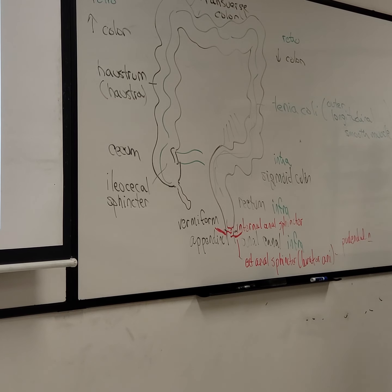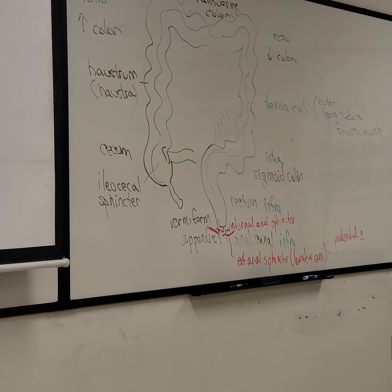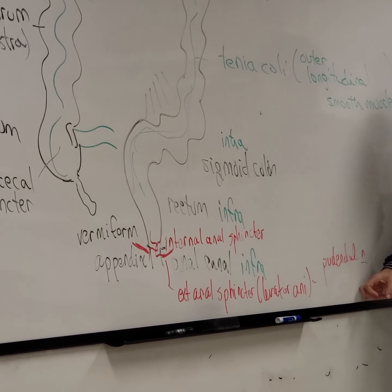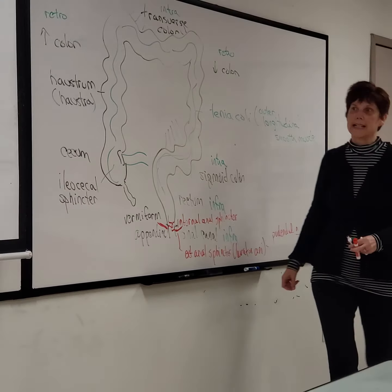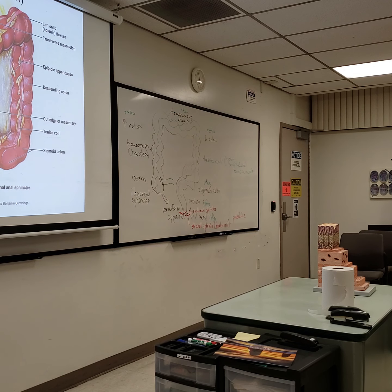The neural reflex for defecation is the same type we saw for micturition. Stretching of the rectum with fecal matter sends sensory input back to the spinal cord via the pudendal nerve, causing the parasympathetic to relax the internal anal sphincter and start parasympathetic contraction of the rectum. We have to inhibit the pudendal motor innervation to allow the external anal sphincter to relax. Blood supply for the descending colon is the inferior mesenteric artery; for the rectum we have superior, middle, and inferior rectal components.